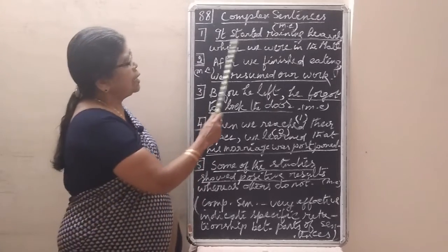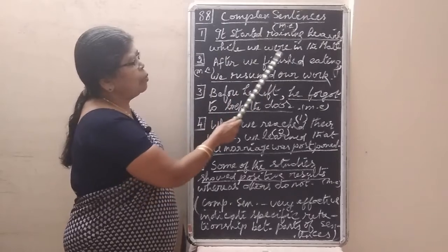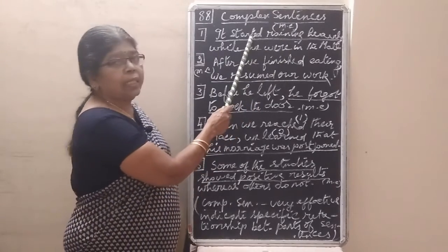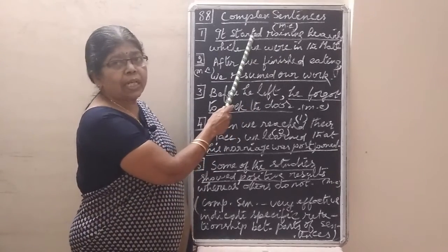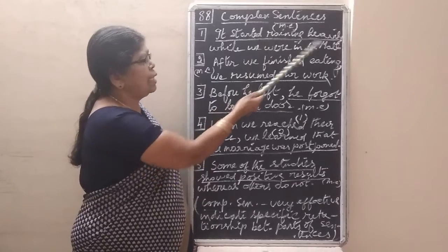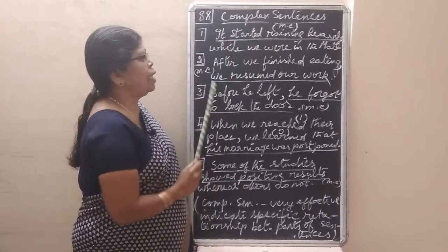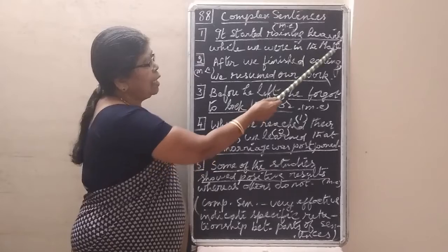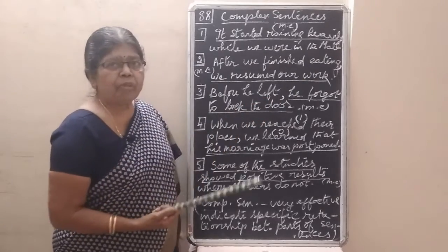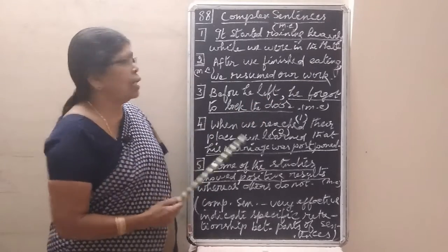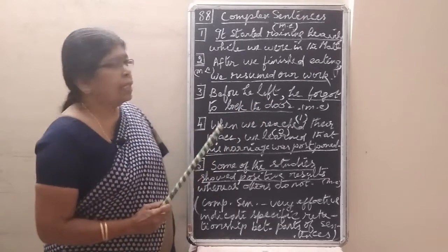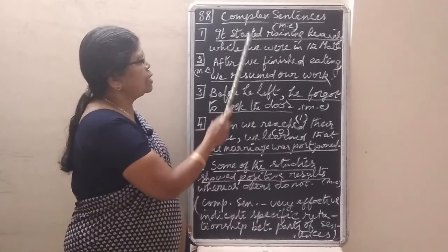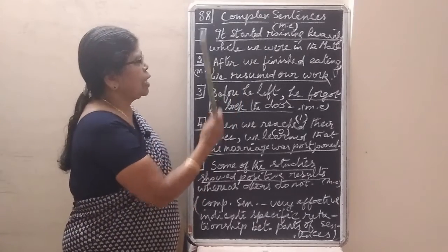It started raining heavily while we were in the mall. The first part — 'it started raining heavily' — is the main clause. You can also say 'when we were in the mall.' The second part, 'while we were in the mall,' is the subordinate clause.